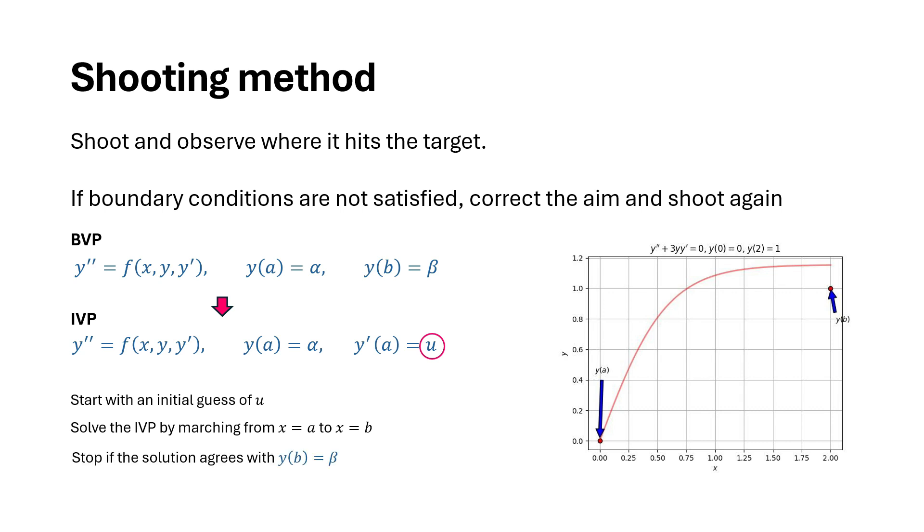We stop if the solution agrees with the boundary condition, that is y at b equals beta. Otherwise we adjust u and try again until we find the solution.